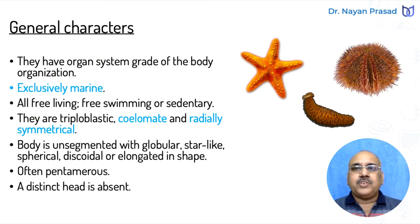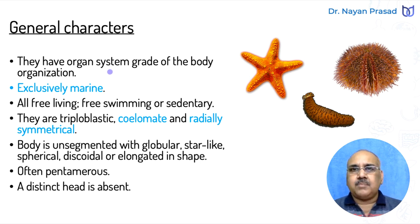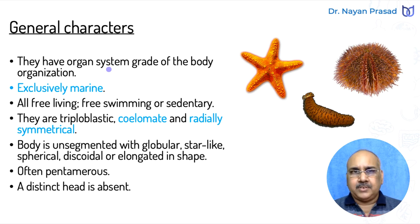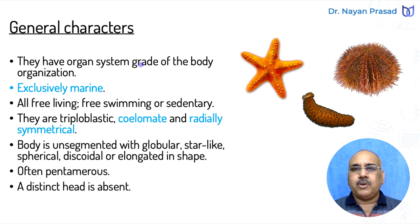Now let us see the general characters of Phylum Echinodermata. One common feature is that they have organ system grade of body organization. This condition is found in several higher animals. In previous groups — Protozoa, Porifera — there is less developed body organization. But after Platyhelminthes, from Nematelminthes to chordates, all are with organ system grade of body organization, meaning different organ systems are developed.